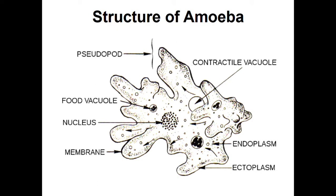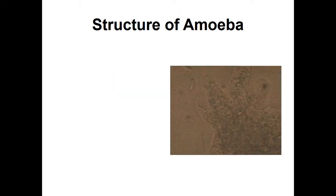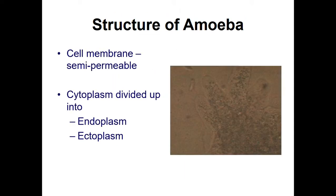Food vacuoles and contractile vacuoles are different. How are food vacuoles formed? How are contractile vacuoles formed? What is the endoplasm? What is the ectoplasm? We are talking about all of this. Under the microscope, we are looking at amoeba.